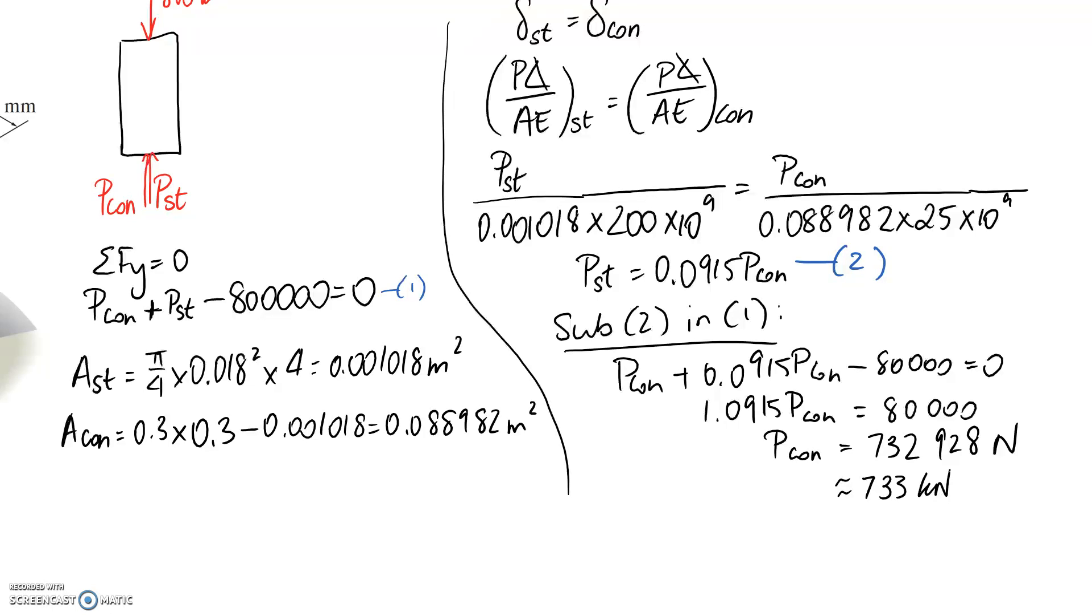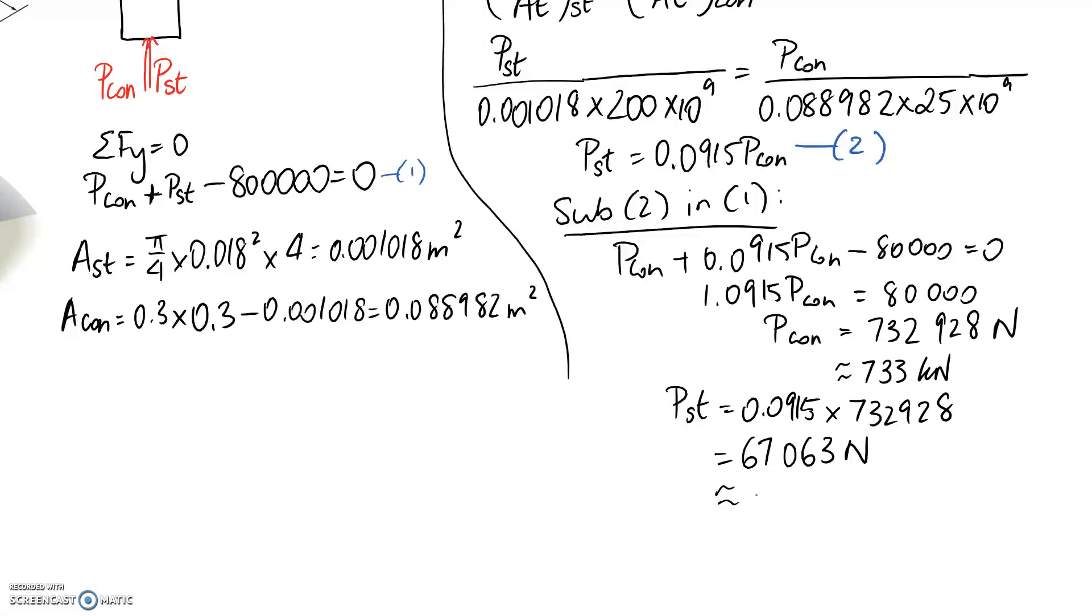So the other value that we need is the force in the steel. And we can get that from going back up to equation two and substituting in. I'm going to get it in newtons first. And that comes out to be 67,063. And of course, again, if you want to round it, divide by 1,000 and you're going to get 67 kilonewtons.